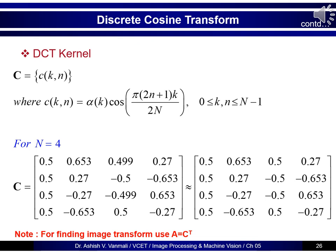Now we will see how to find the DCT kernel. The DCT kernel is normally represented by matrix C, where the value is alpha_k times cos(pi(2n plus 1)k upon 2N), with k and n both running over 0 to N minus 1. For N equals 4, the matrix C looks as shown, along with its corresponding approximated version. One should remember this kernel is not the transformation matrix directly — the transformation matrix A is actually C transpose, or equivalently C equals A transpose.